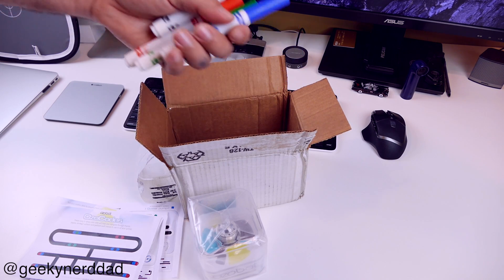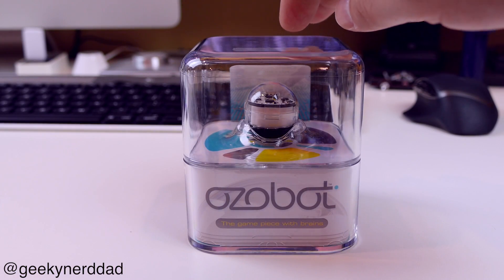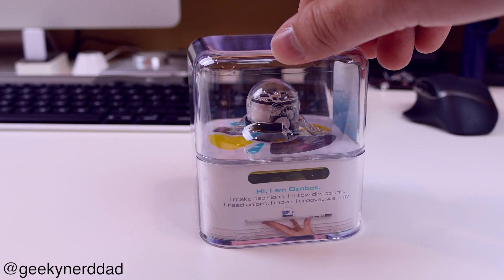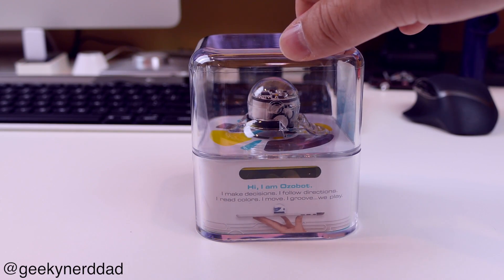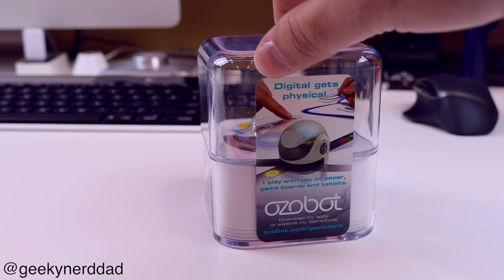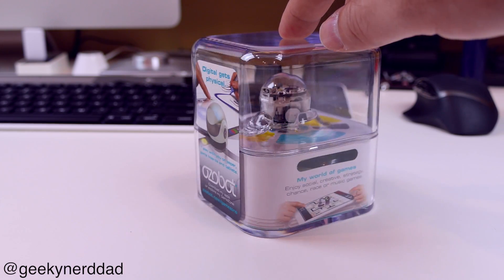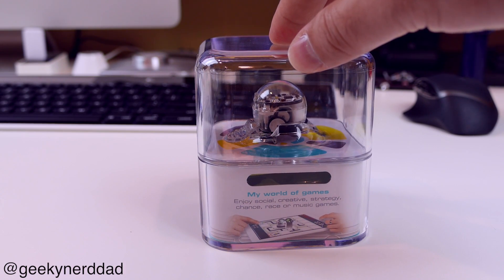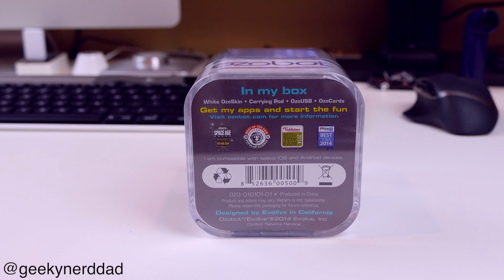This one here you can draw your own map and make it do its own different things. They also sent me some markers. You need these four colors, that is what the Ozobot reads. Here, just taking a look around the packaging.